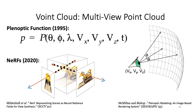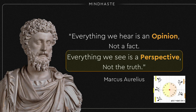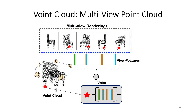This idea of view dependency is not entirely new. The plenoptic functions from 1995 used them to describe the world from any viewing angle. NeRFs in 2020 used them to describe radiance fields in neural volume rendering. Even the great Roman emperor and philosopher Marcus Aurelius has a famous quote: 'Everything we hear is an opinion, not a fact. Everything we see is a perspective, not the truth.' Basically, what we see is just one viewpoint of the underlying truth. So our Voint Cloud representation is a set of Voints where each Voint is a set of view features for the corresponding point. Not all points appear from all views, and hence each Voint has a different number of view features than other Voints in the same Voint Cloud.